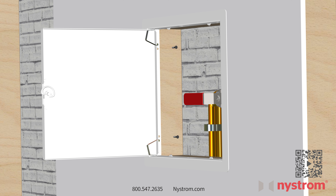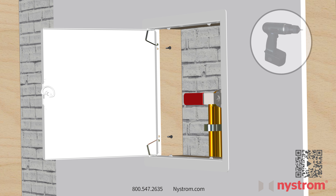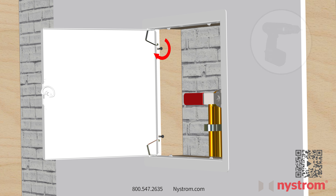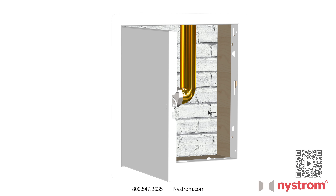Next, secure the hinge side using two fasteners. Insert the fasteners through both pre-drilled holes. Fully tighten the screws using a power drill. Take care not to over-tighten. Repeat these steps and secure the opposite side.